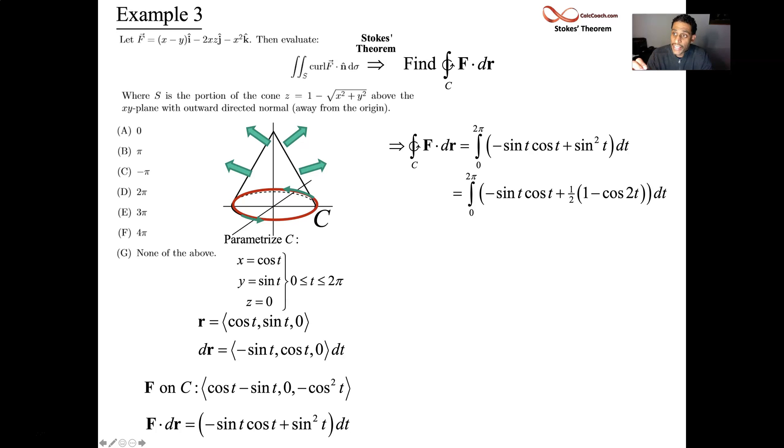Well, for sine squared, it's 1 half 1 minus the cosine of double t. All right, nice simple integral because we take advantage of the fact that we have full periods of these functions.